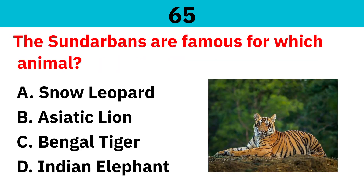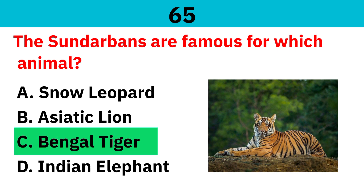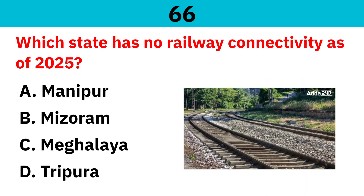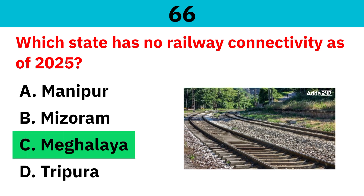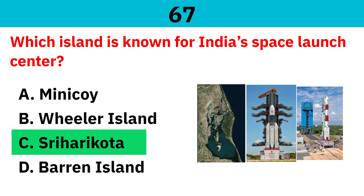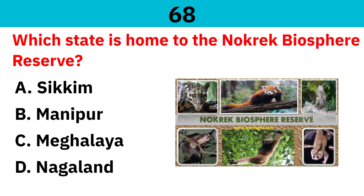The Sundarbans are famous for which animal? Correct answer is Bengal tiger. Which state has no railway connectivity as of 2025? Correct answer is Meghalaya. Which island is known for India's Space Launch Center? Correct answer is Sriharikota. Which state is home to the Nokrek Biosphere Reserve? Correct answer is Meghalaya.